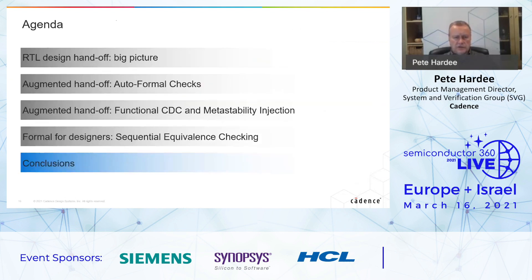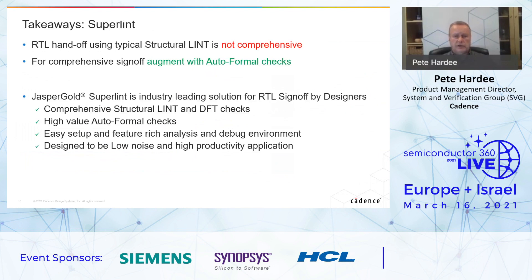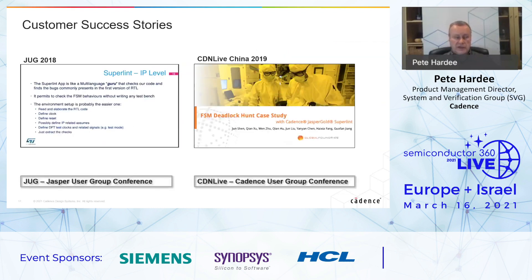Reaching the conclusion section: the takeaways for Superlint. RTL handoff using structural lint alone is not comprehensive. For comprehensive sign-off, augment with automatic formal checks. Jasper Gold Superlint is the industry-leading solution for RTL sign-off, with comprehensive structural lint and DFT checks augmented with high-value auto formal checks. It offers easy setup, a rich feature analysis and debug environment, and is designed to be low-noise and high-productivity. ST presented on this at the Jasper User Group, and GlobalFoundries presented at a recent CDN Live.